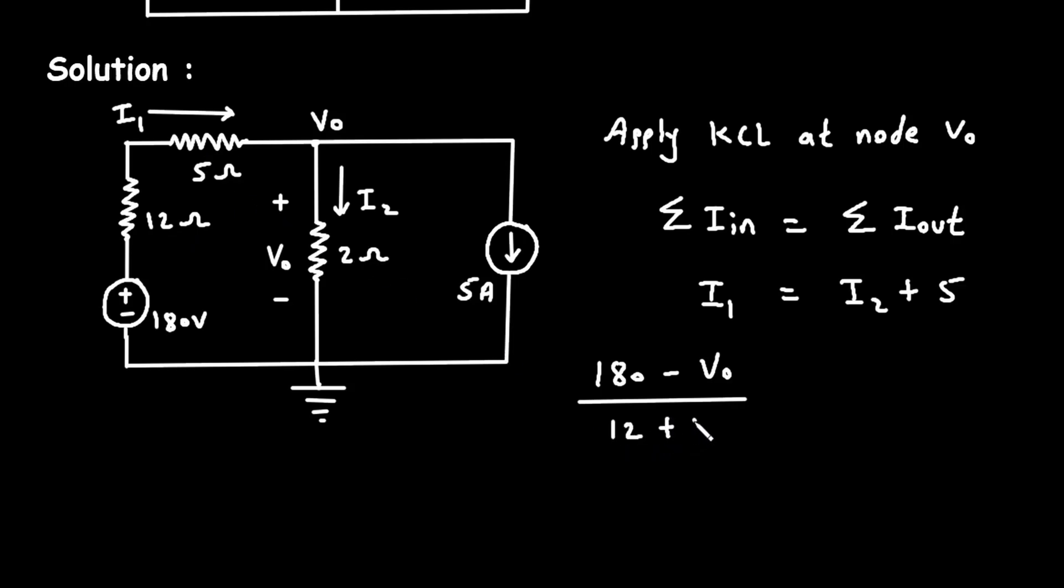12 plus 5 is equal to I2. This I2 will be VO minus 0. This node voltage is 0. VO minus 0 divided by 2 ohm, then plus 5.